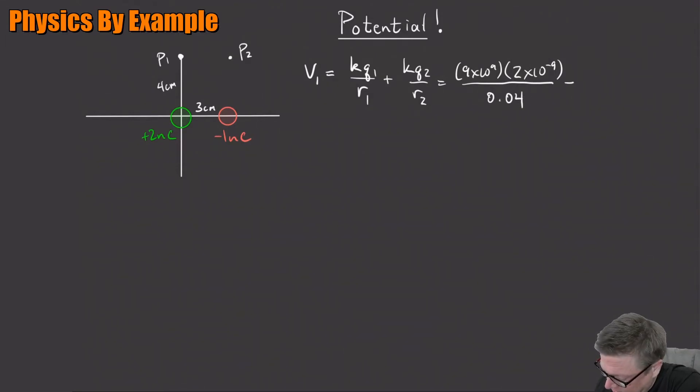And then I got minus because the other charge is negative. 9 times 10 to the ninth. 1 times 10 to the minus nine. What is that distance? It's 3, 4, 5. So that's going to be 0.05.